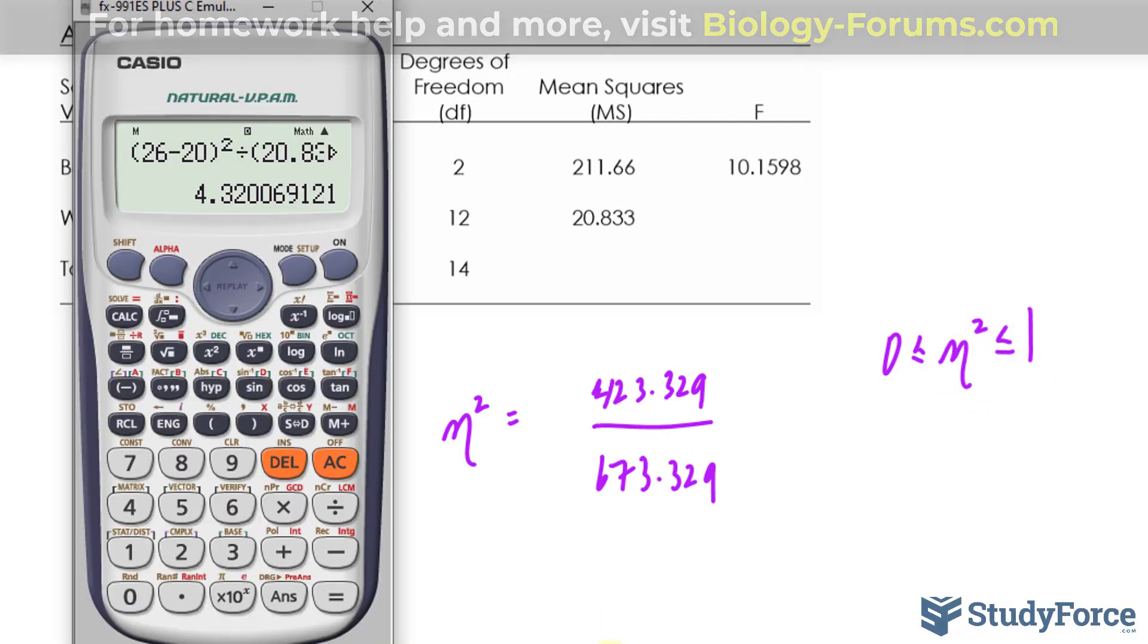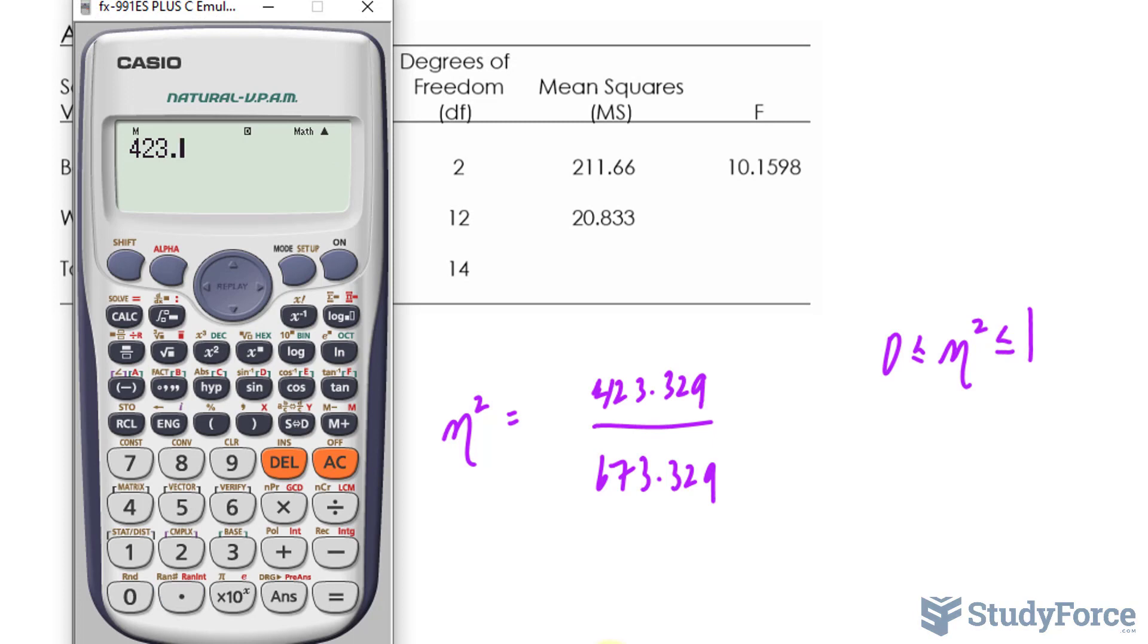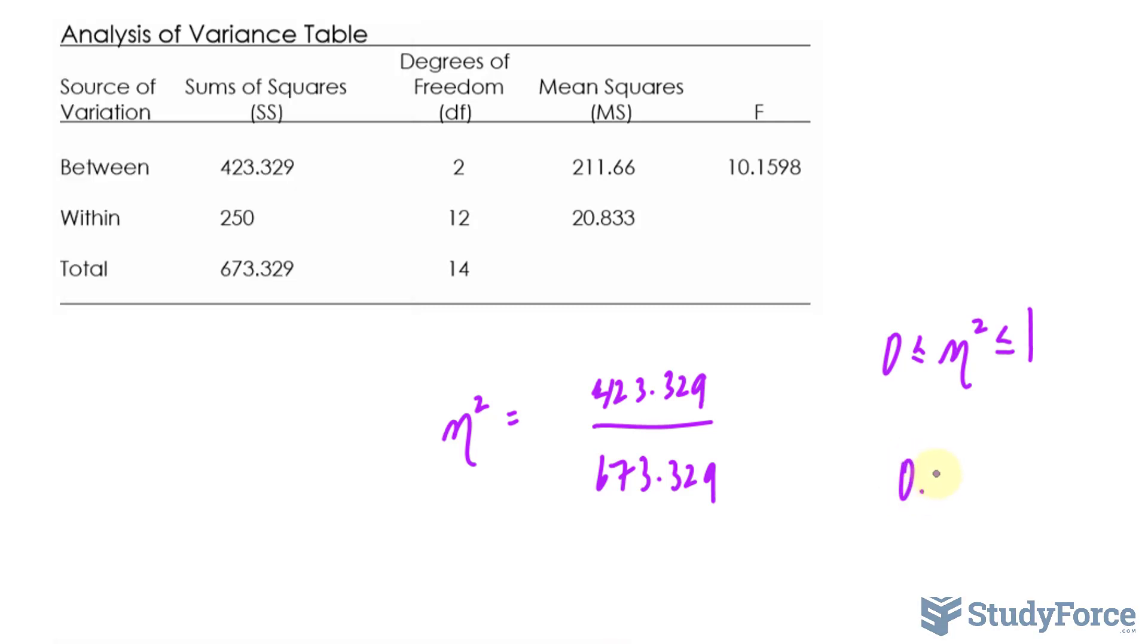Let's go ahead and calculate this. We have 423.329 divided by 673.329. We get the value 0.628 approximately, 0.6287.